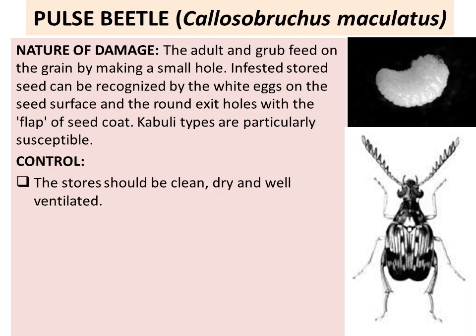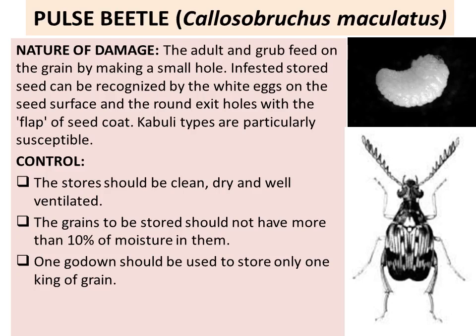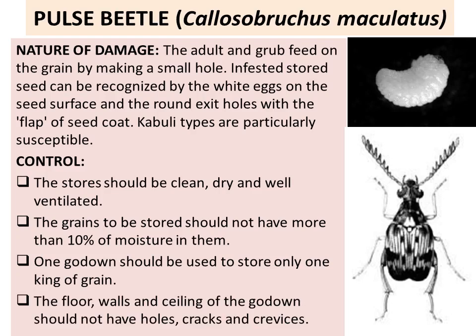Control: The stores where pulses are stored should be clean, dry, and well ventilated. The grains should be stored with not more than 10% moisture. One godown should be used to store only one kind of grain. The floor, walls, and ceiling of the godown should not have holes, cracks, or crevices.